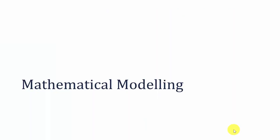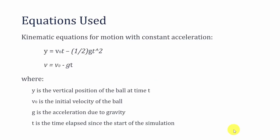First let's see the mathematical modeling. For the simulation I have used three equations. One is y equals v0*t minus half g*t squared. These two are the kinematic equations with constant acceleration and the second equation is v equals v0 minus g*t. Here y is the vertical position of the ball and v0 is the initial velocity of the ball, then g is the acceleration due to gravity and t is the time elapsed since the start of the simulation.